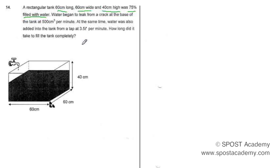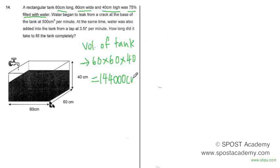So first we will find the volume of the tank which will be 60 times 60 times 40. We will get 144,000 cm³. So the volume of the tank is 144,000 cm³ but it is not fully filled.